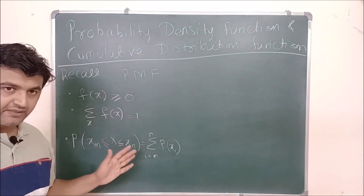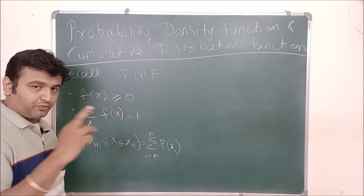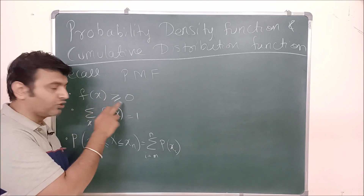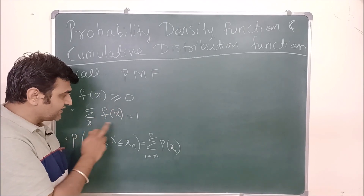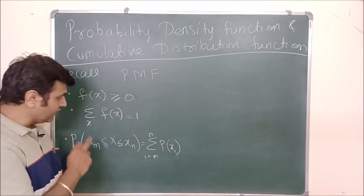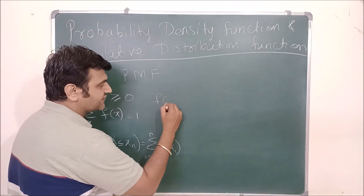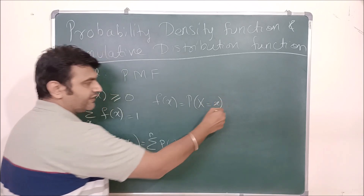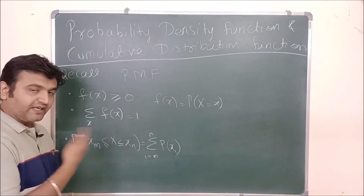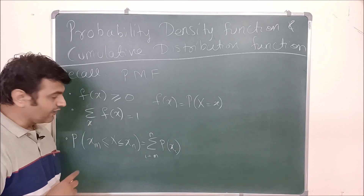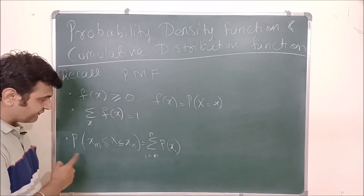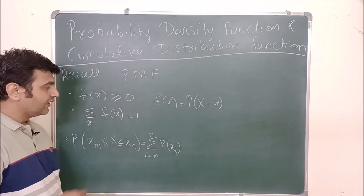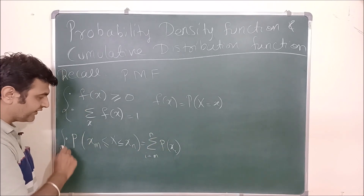You can find the link in the description for the earlier lecture. So what was the probability mass function? F is said to be a probability mass function if it is non-negative, and the summation of all probabilities is one. F of X is nothing but the probability that the random variable X takes the value small x, where x goes from minus infinity to infinity. And if you want to find the probability between any two points, you simply sum up the probabilities.